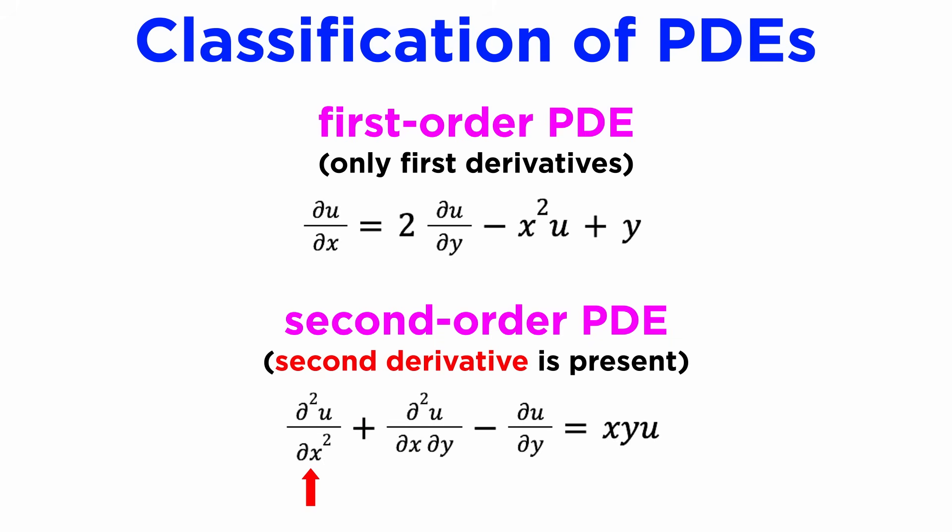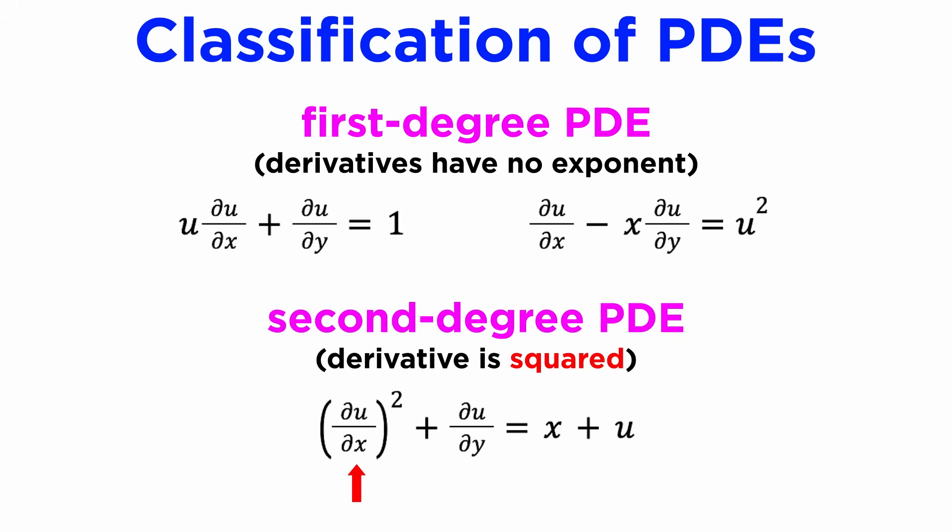Next, the order of a PDE is the highest derivative of U that appears in the equation, and the degree of a PDE is the exponent on that highest derivative.